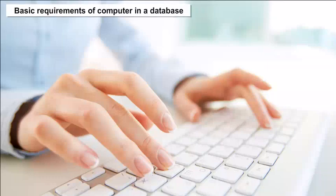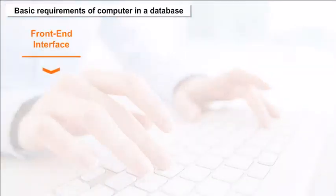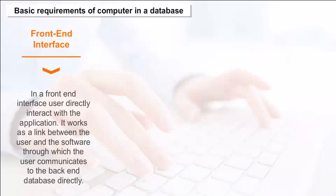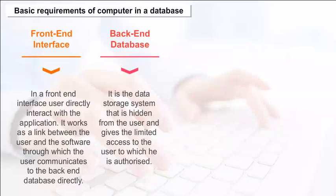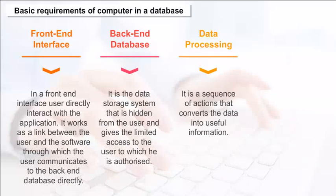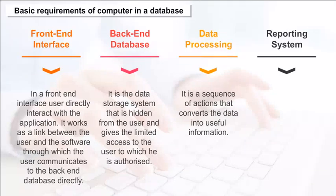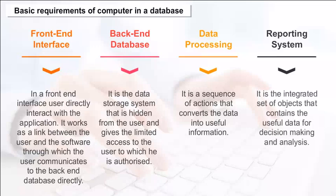Basic requirements of a computer in a database include: a front-end interface, where the user directly interacts with the application and it works as a link between the user and the software to communicate to the back-end database; a back-end database, which is the data storage system hidden from the user that gives limited authorized access; data processing, which is a sequence of actions that converts data into useful information; and a reporting system, which is an integrated set of objects containing useful data for decision-making and analysis.